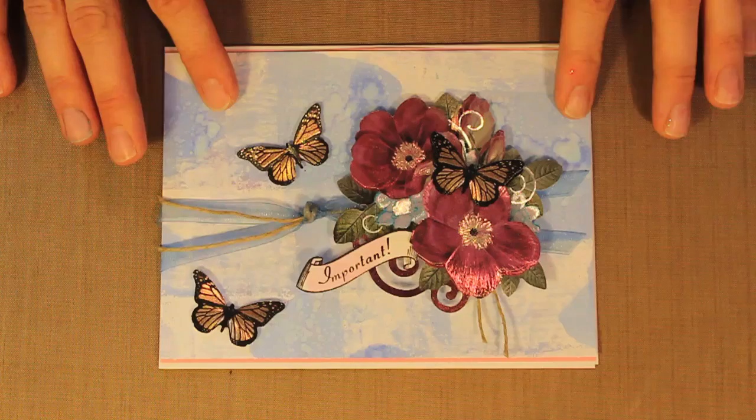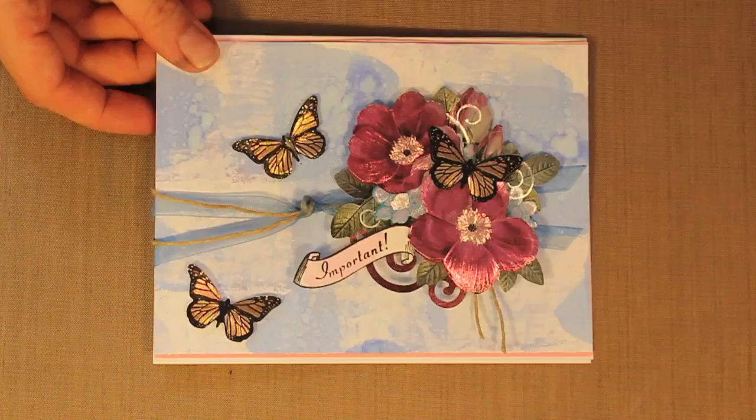And this background is Spectrum Noir ink that has been brayered onto cardstock. It's such an easy technique to do and it gives a really great fast background. So let me show you how I've done this.